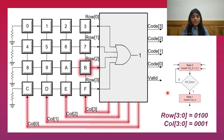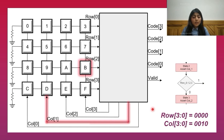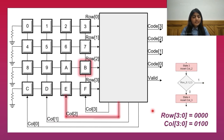To identify which key has been pressed, the column lines are asserted one by one. First the column 0 line is asserted. If the row vector is 0, it means that no key from this column has been pressed. Similarly, when the column 1 line is asserted, the row vector is 0, so the machine proceeds to check the next column. Similarly, at column 2 also the row vector is 0, so the machine proceeds to check the next column.